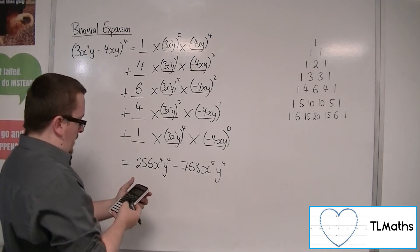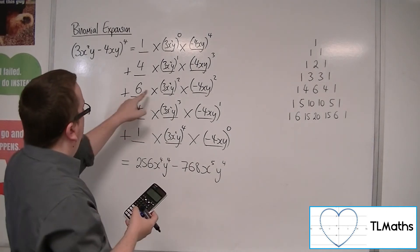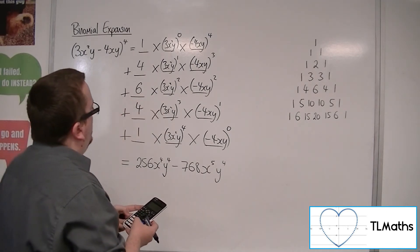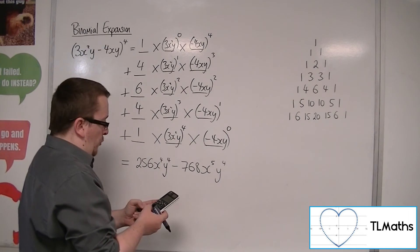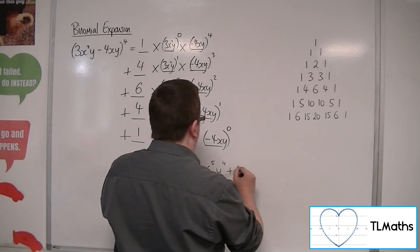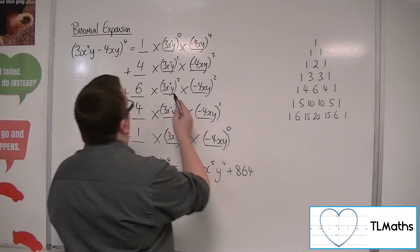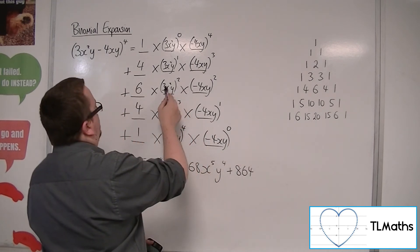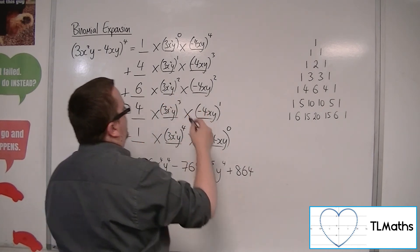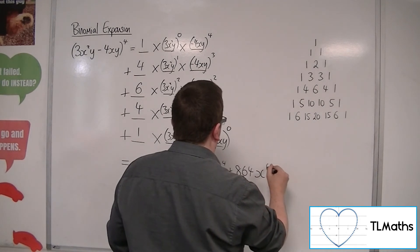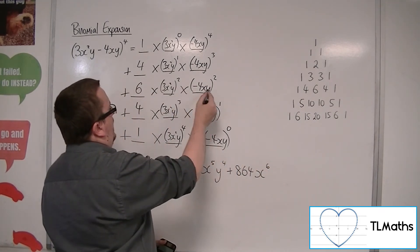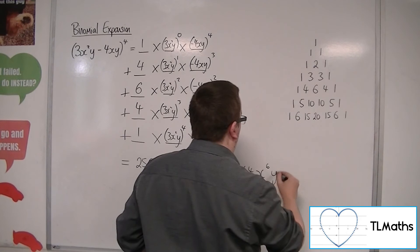The next term: 6 times 3 squared times minus 4 squared. That's 864. We've got x squared squared, so x to the 4 times x squared, giving x to the 6. And y squared times y squared, so y to the 4.